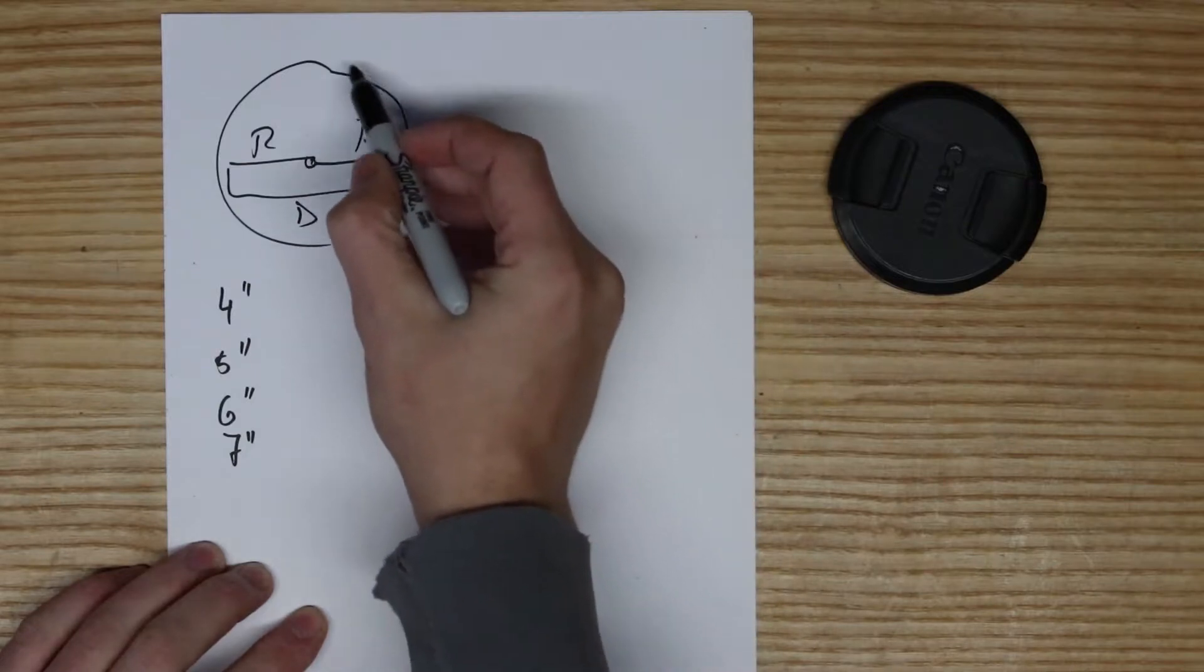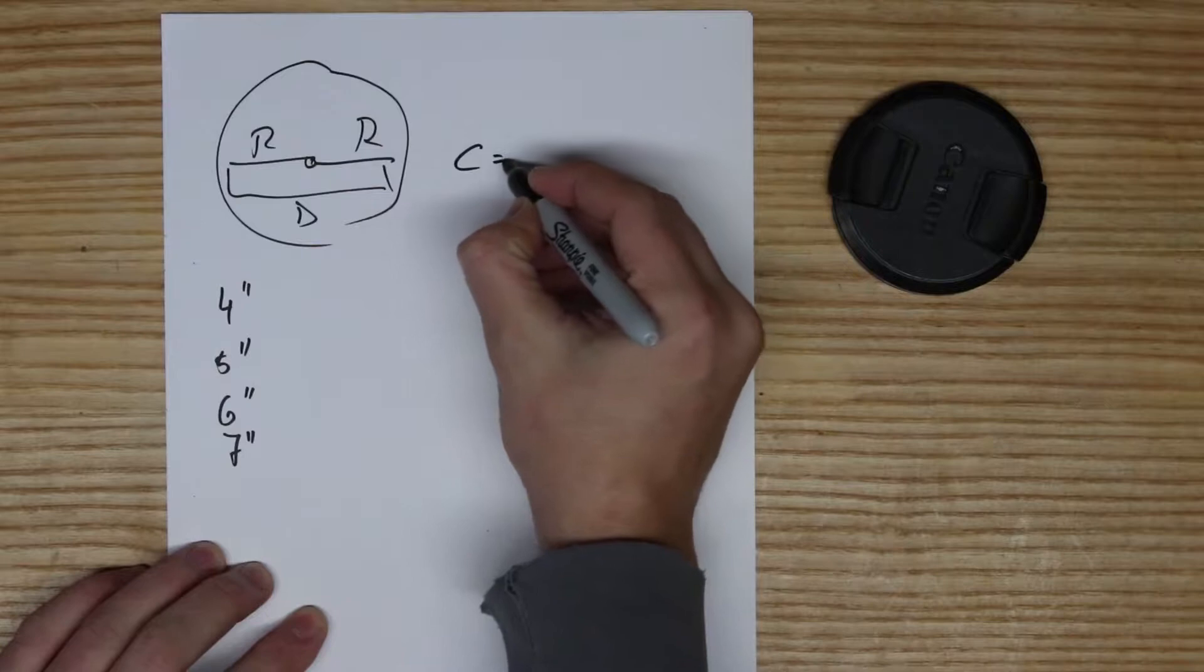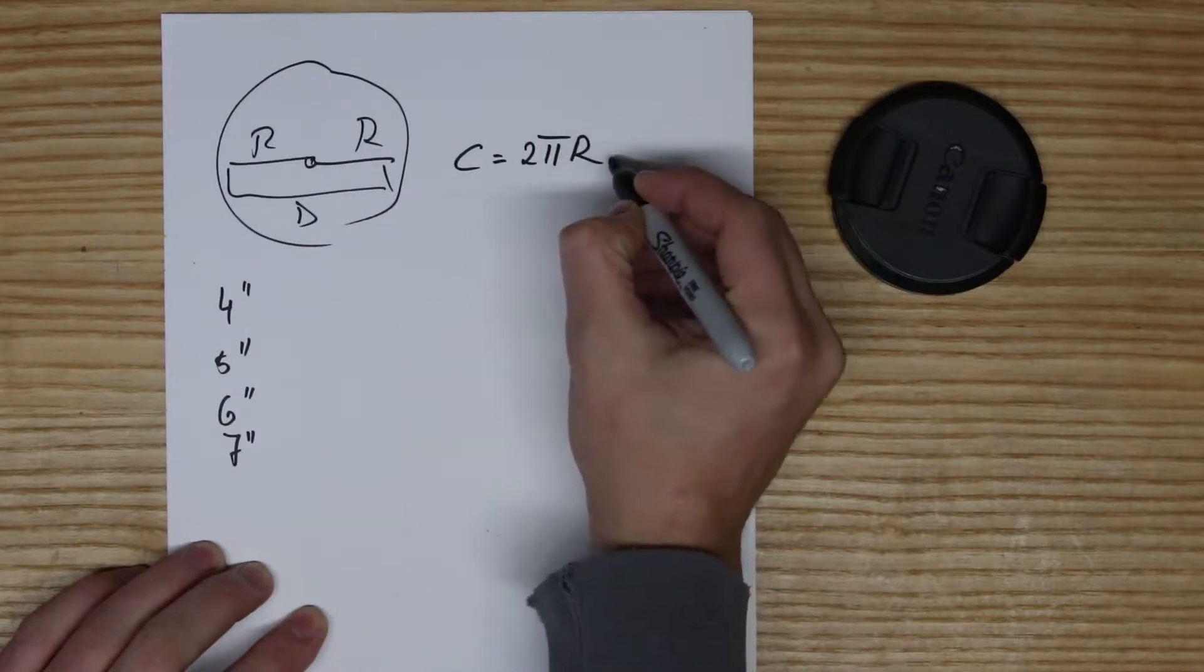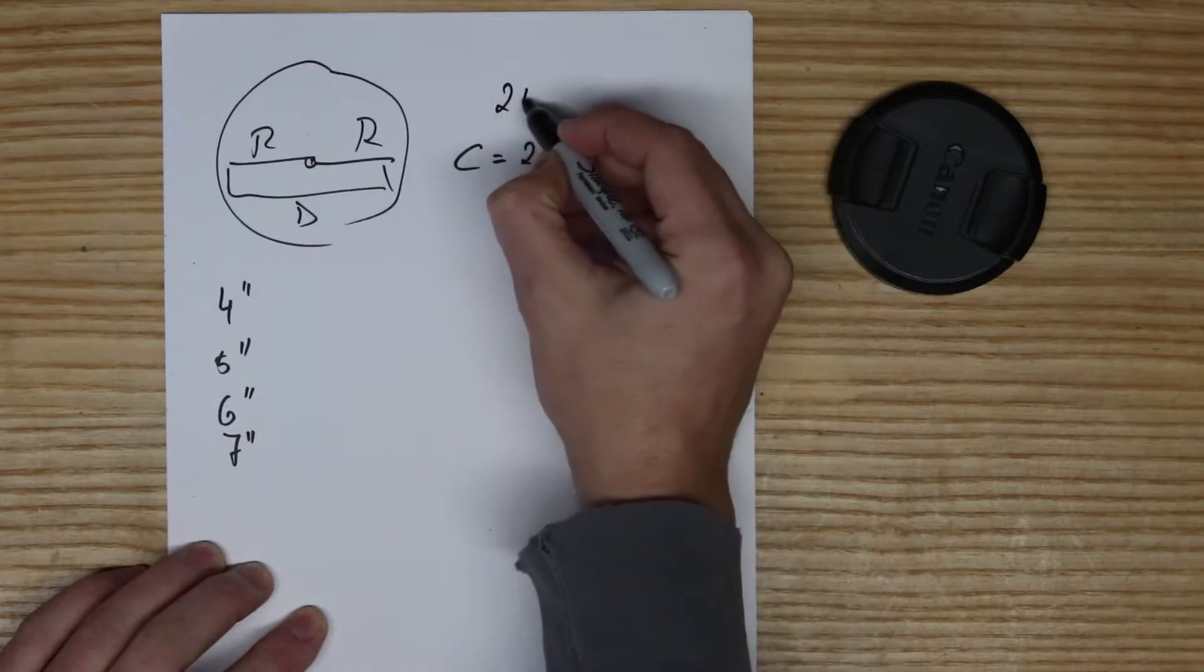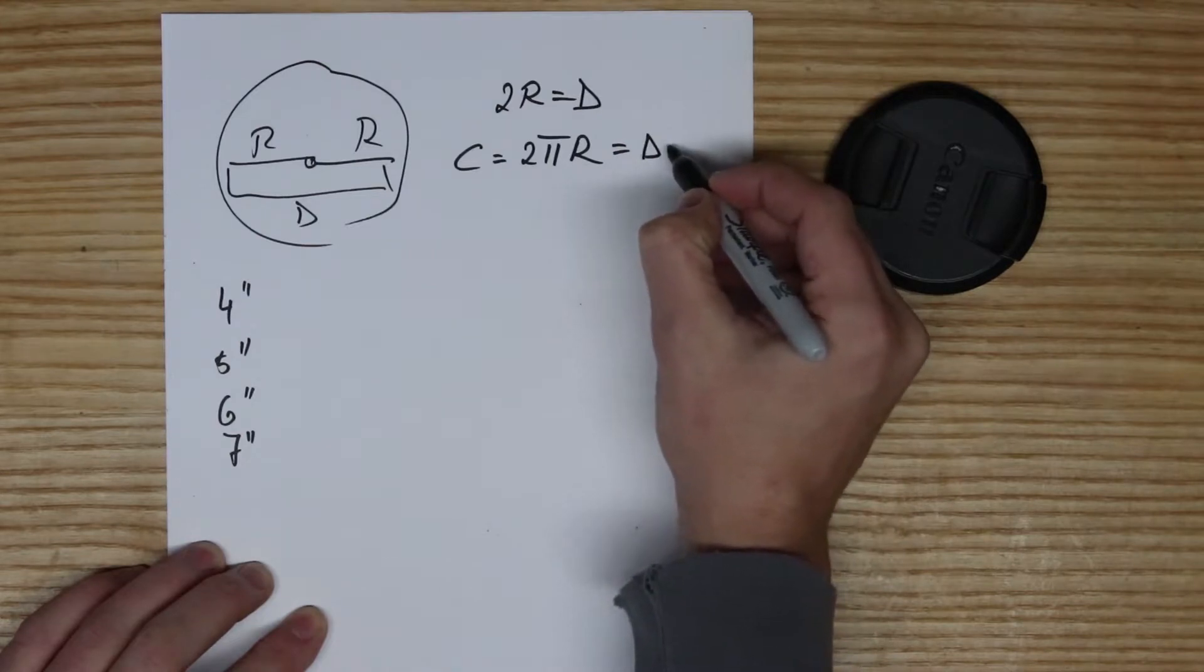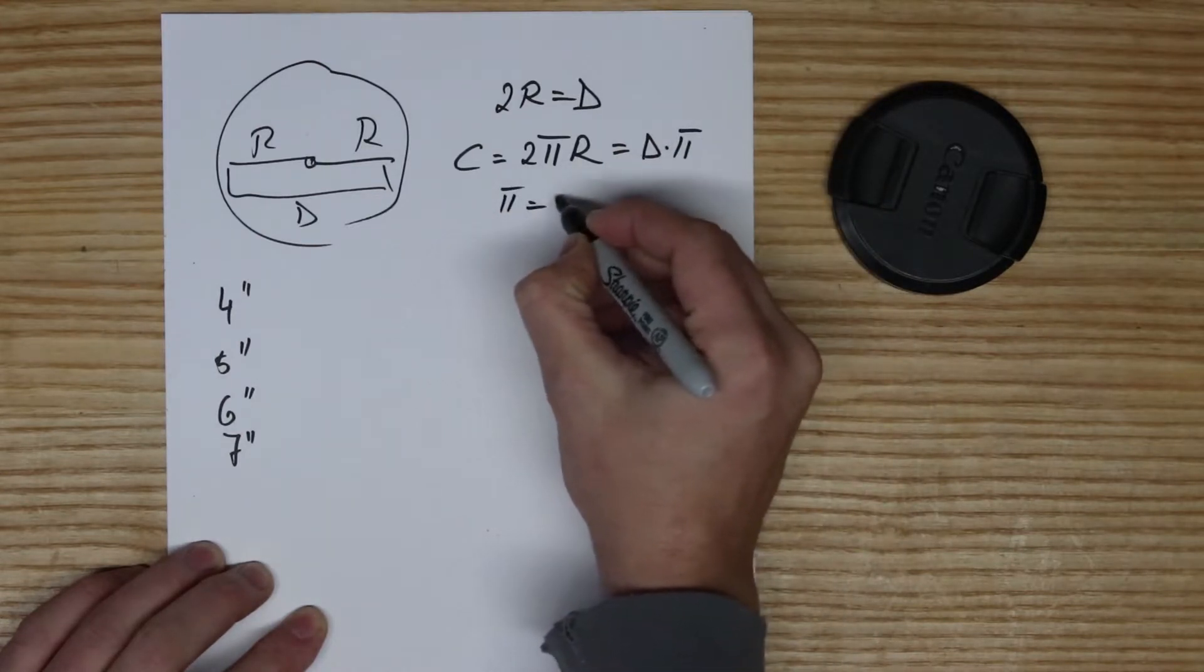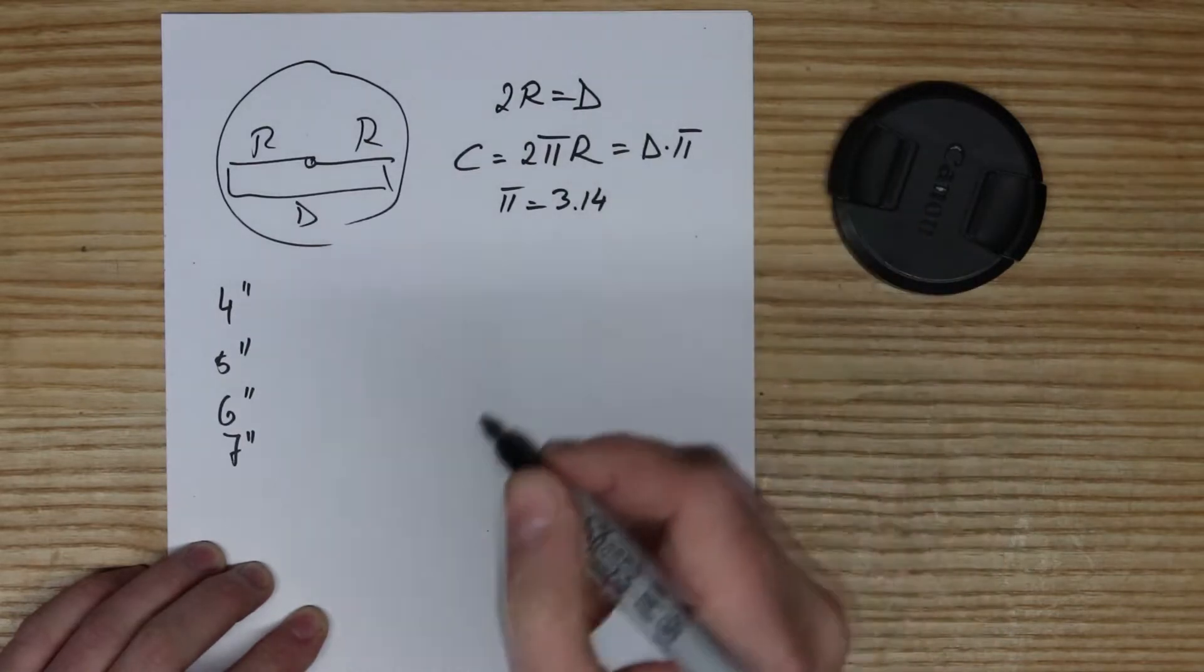Now, the circumference is what we're really interested in. The circumference is equal to two multiplied by pi multiplied by the radius. Obviously, two radiuses are equal to a diameter, so diameter multiplied by pi. Pi is 3.14 for this application.